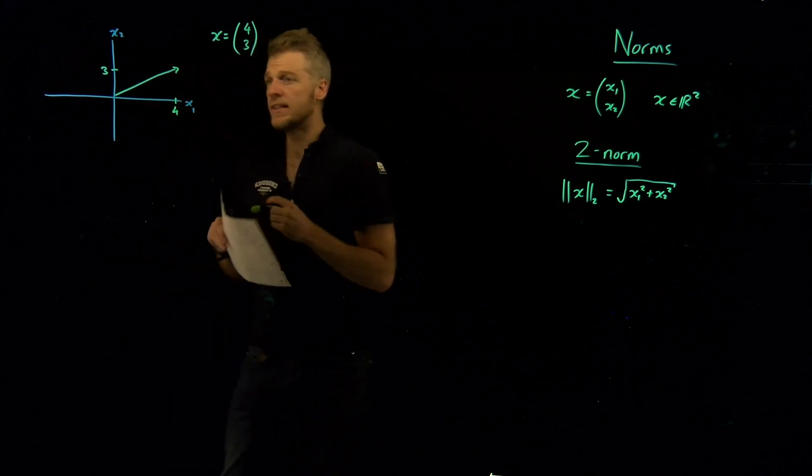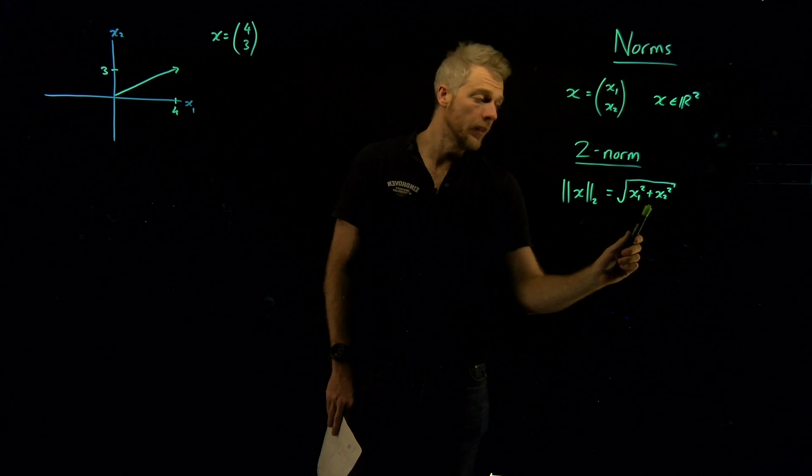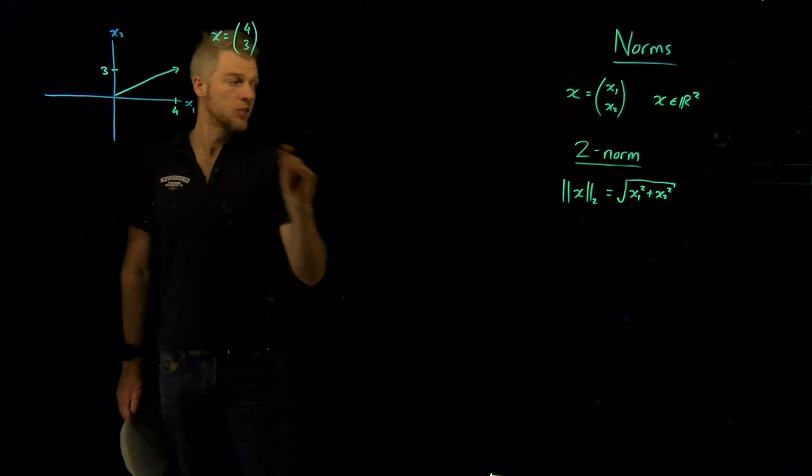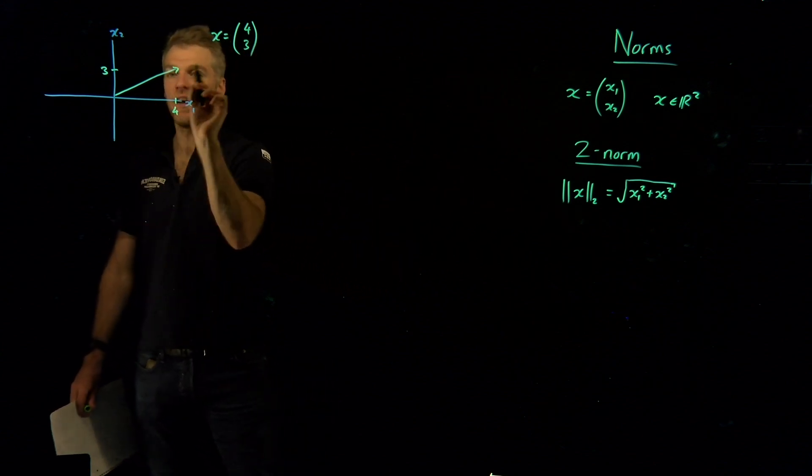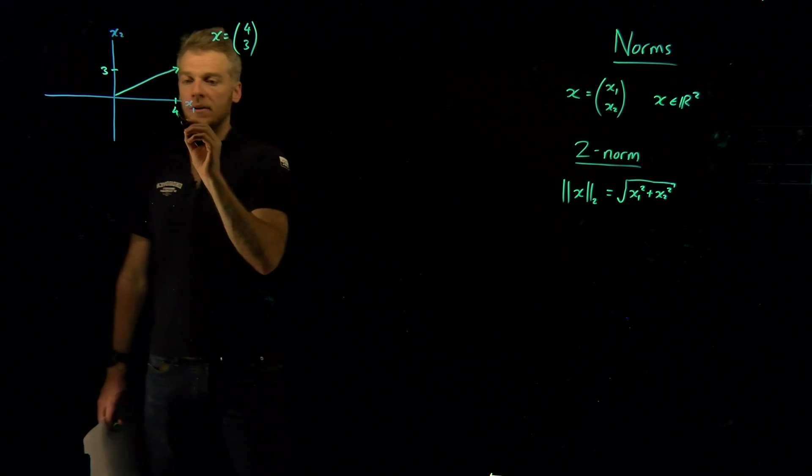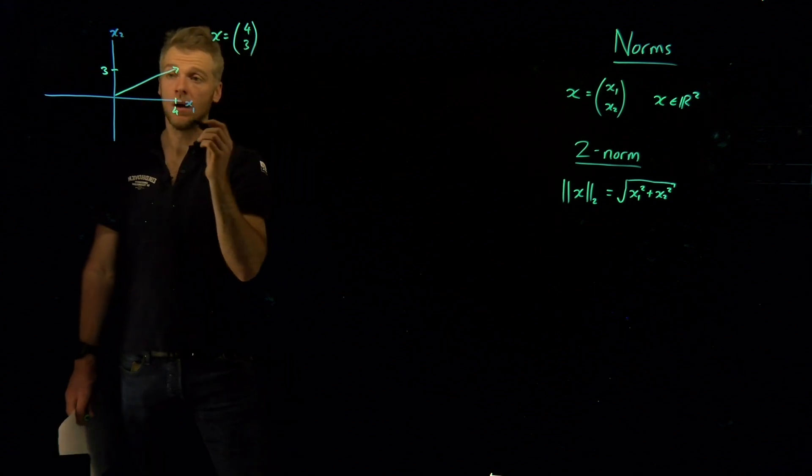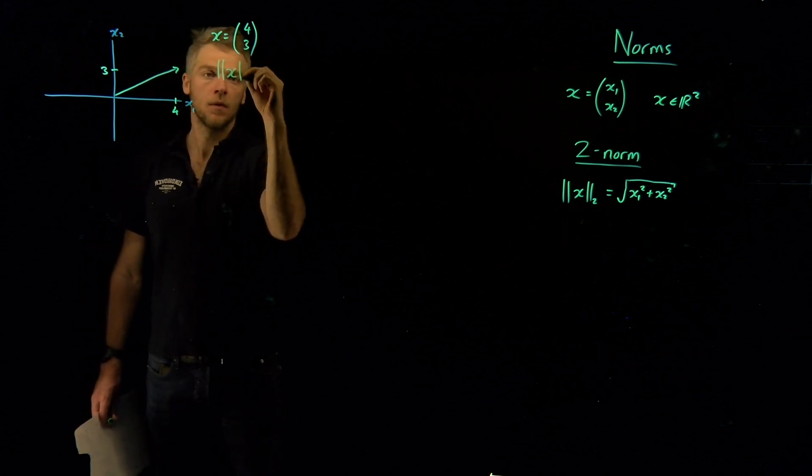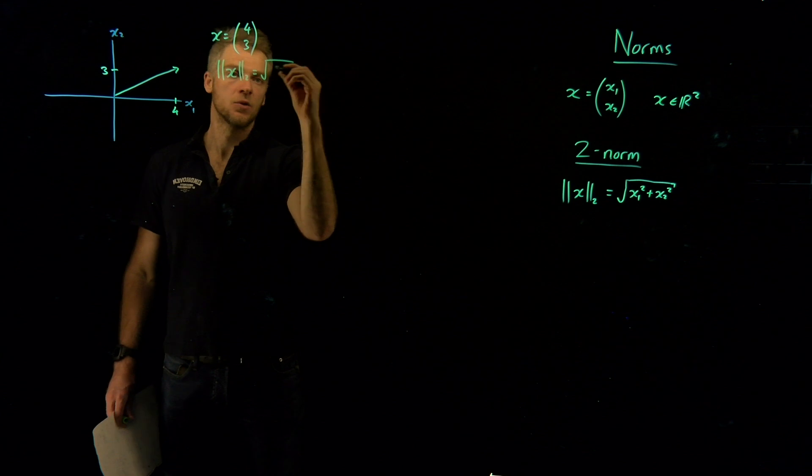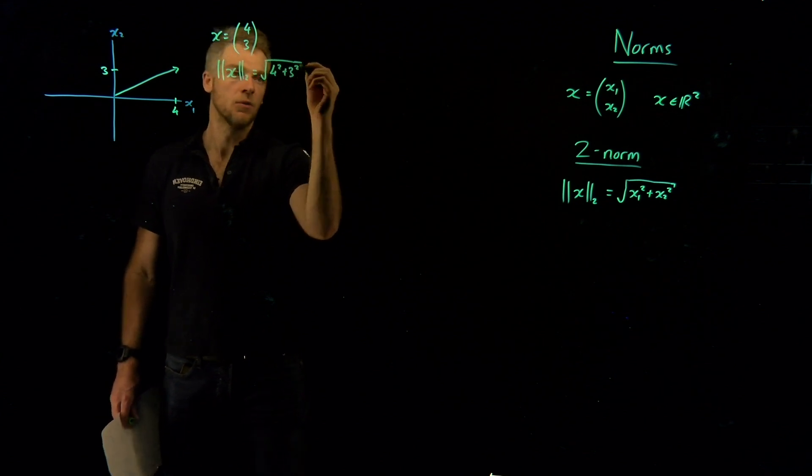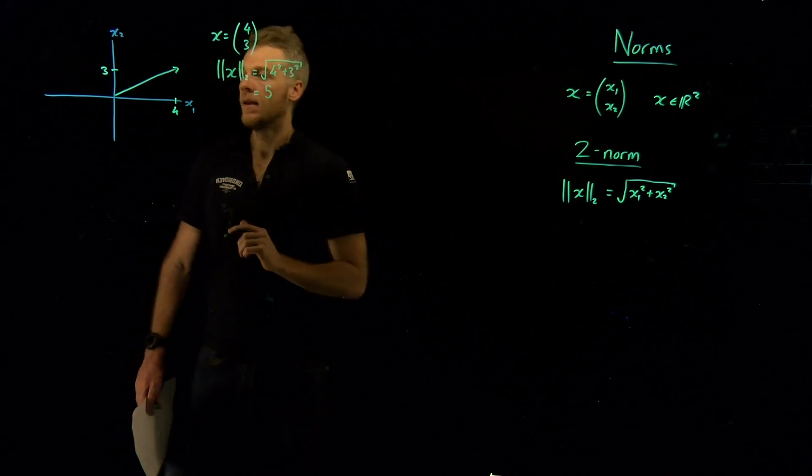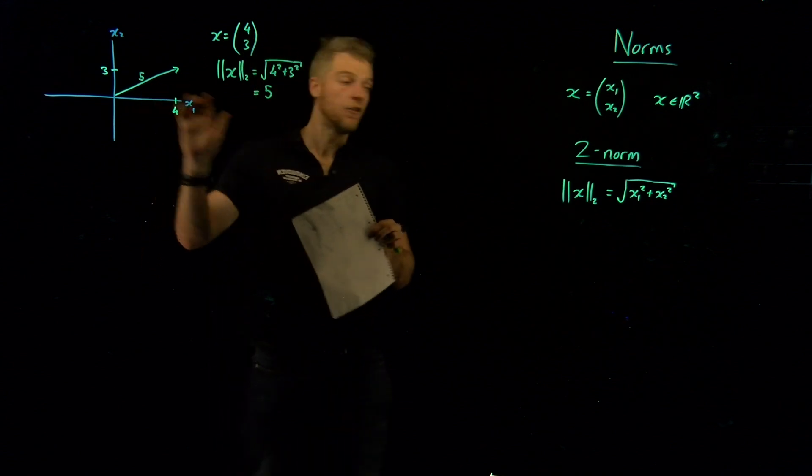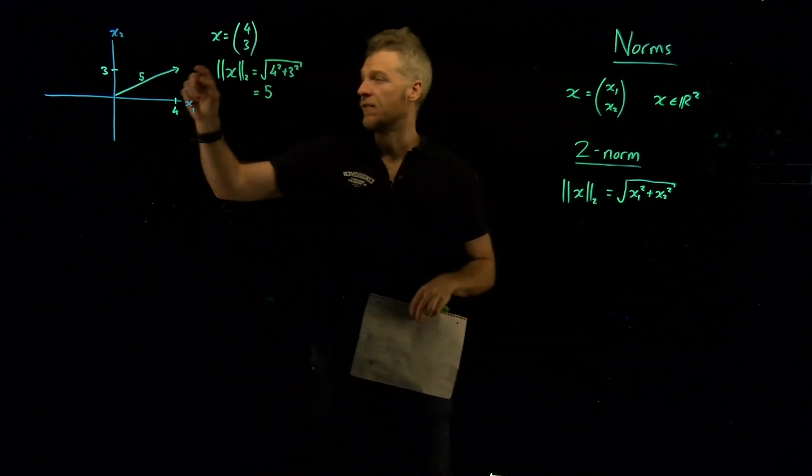Now, as you can probably tell, this formula probably looks really familiar to you. In fact, this is the formula for Pythagoras. And so what you can say is that this 2-norm is really just the length of this vector here. And if you just follow from Pythagoras, the square root of 4 squared plus 3 squared is 5. So that means that the 2-norm of a vector x is just the square root of 4 squared plus 3 squared, which is the square root of 25, which is 5. And that's the length of this vector here. So that's a graphical way you can measure the length of this vector here.